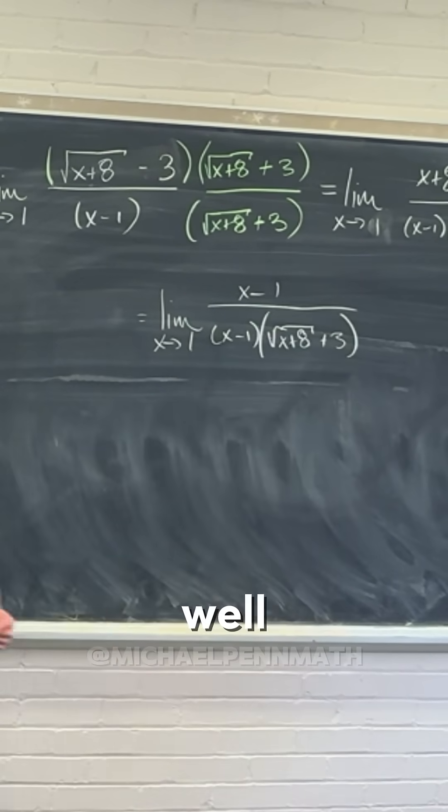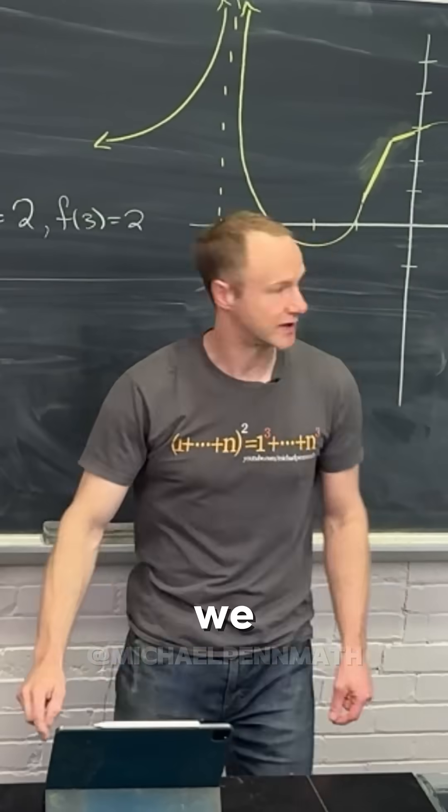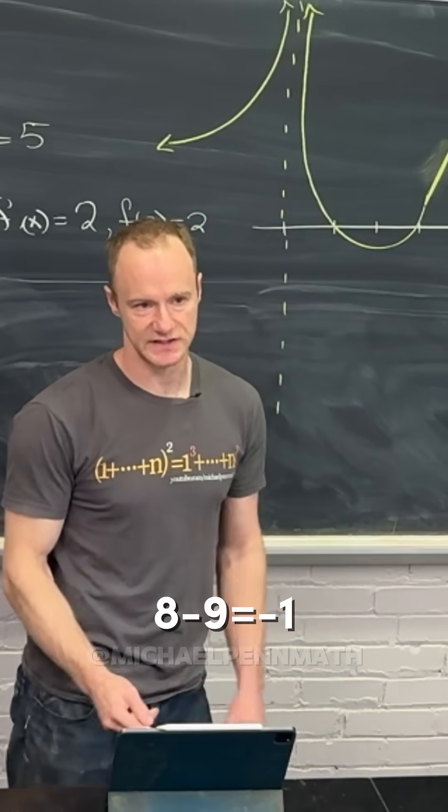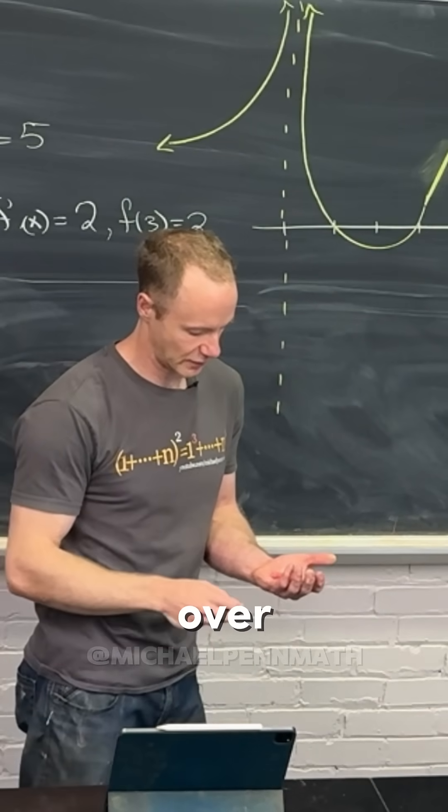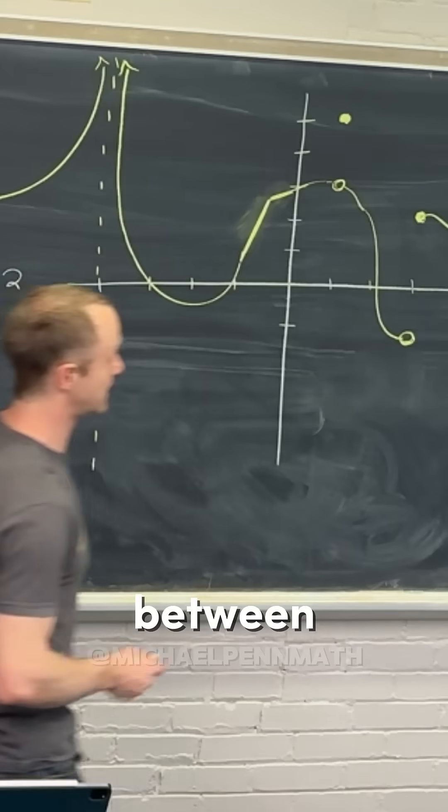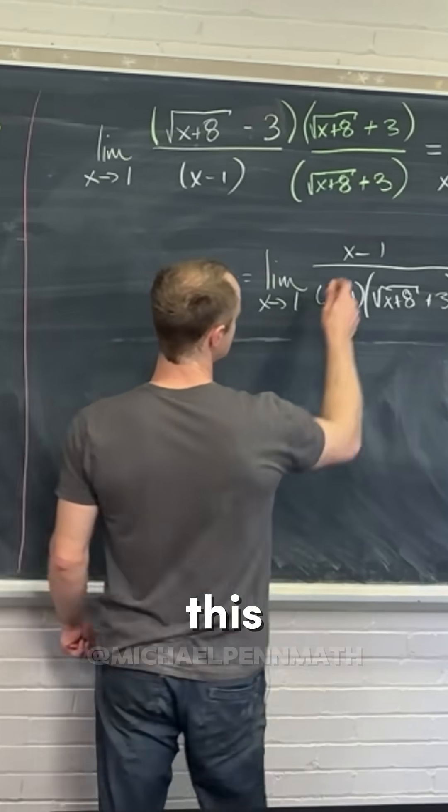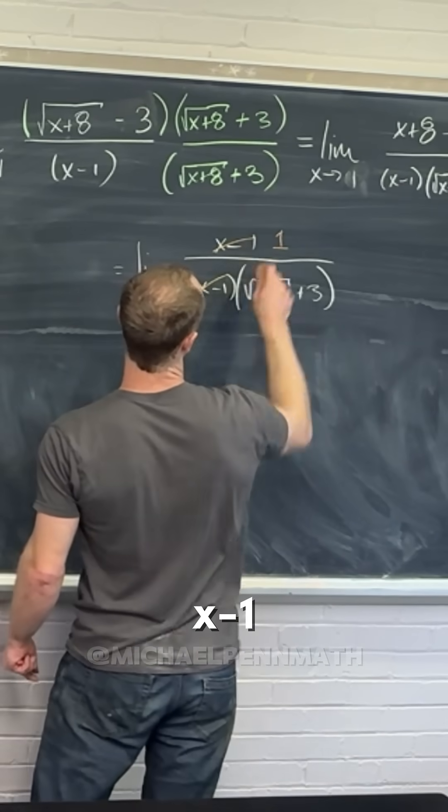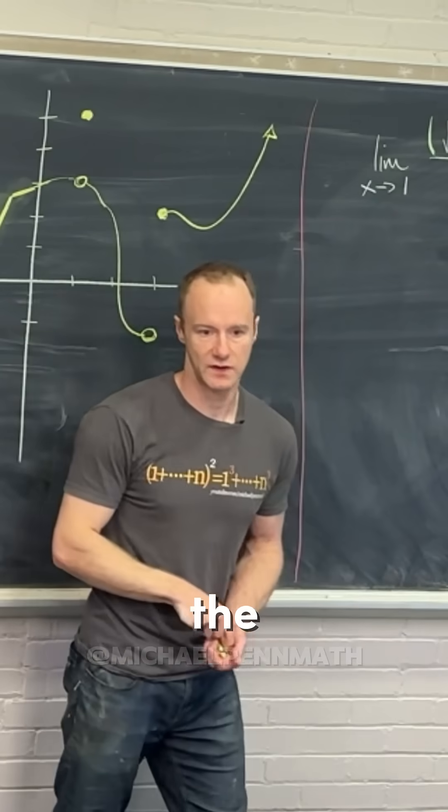The numerator changed: x plus 8 minus 9 gives us x minus 1. The denominator we just copied over. Now notice we get cancellation: this x minus 1 cancels with the x minus 1 in the denominator, leaving us 1 in the numerator.